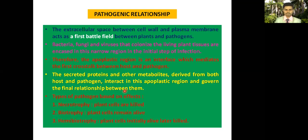Depending on the effect of pathogens, there are three types: necrotrophic pathogens that directly kill the host cell; biotrophic pathogens, in whose association the plant cell remains alive; and hemibiotrophic pathogens, in whose association the host cell is initially alive but later gets killed.